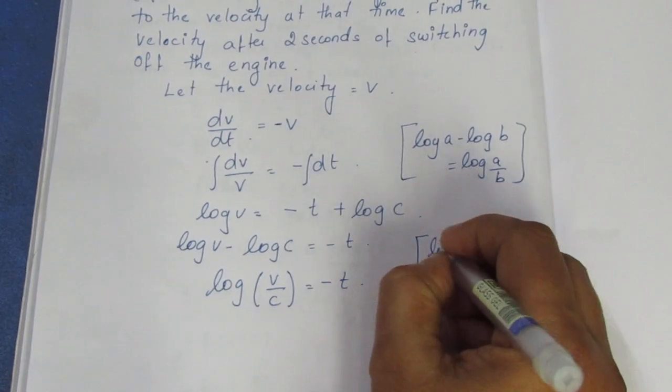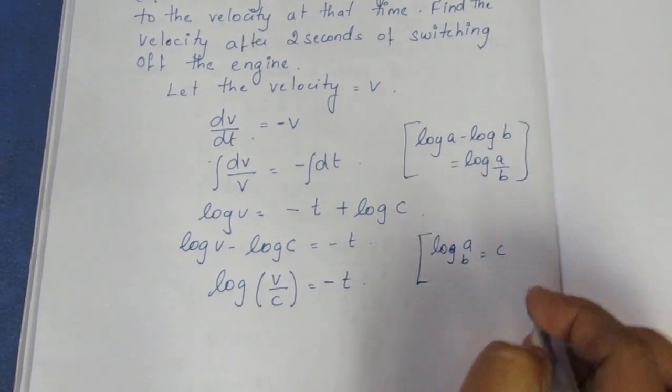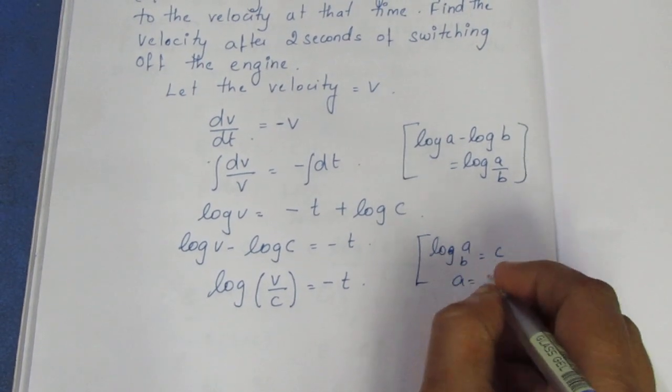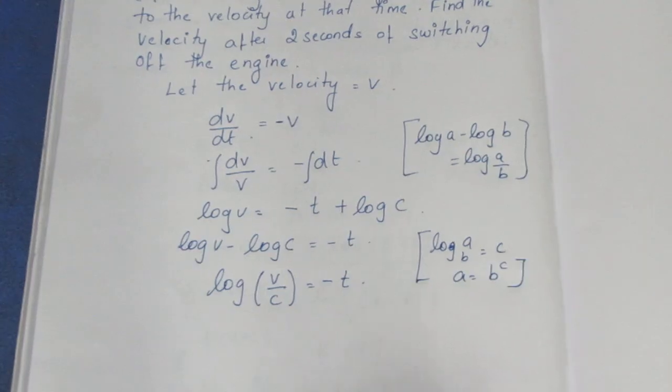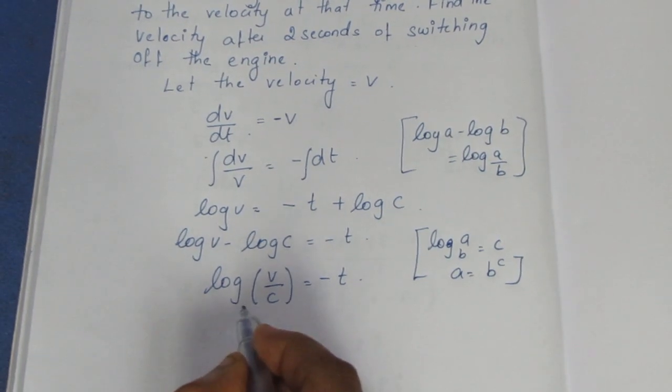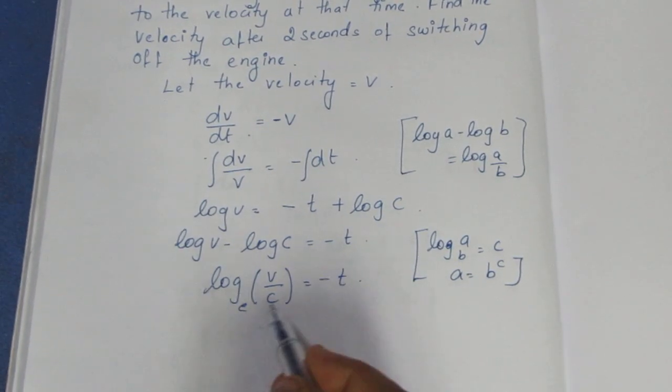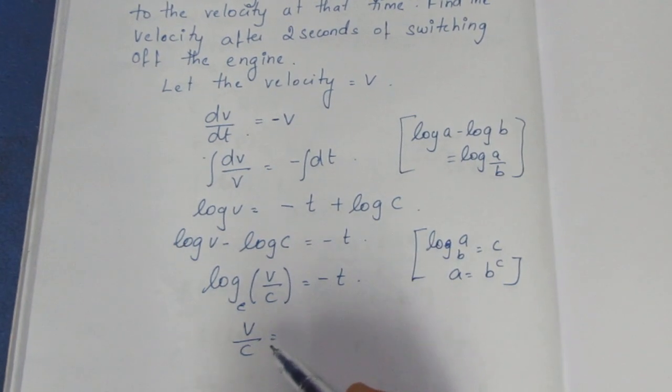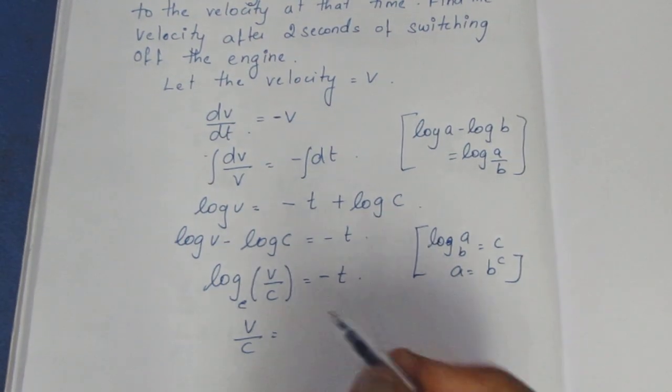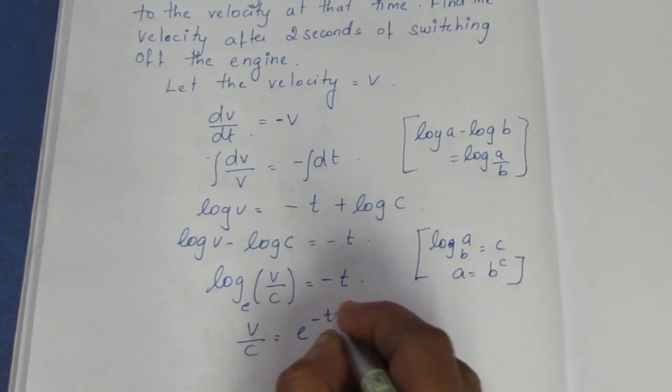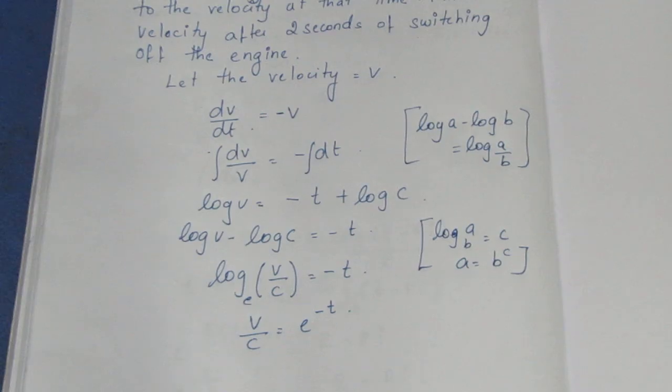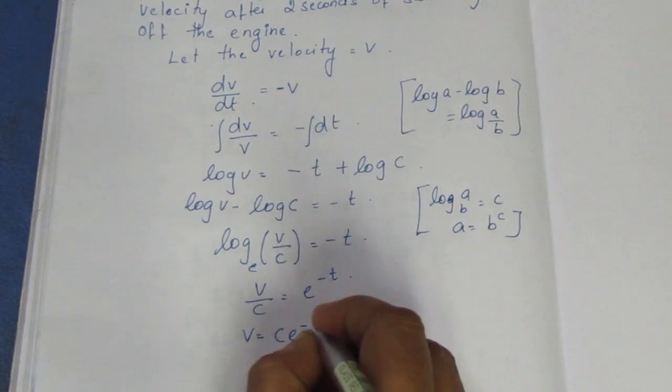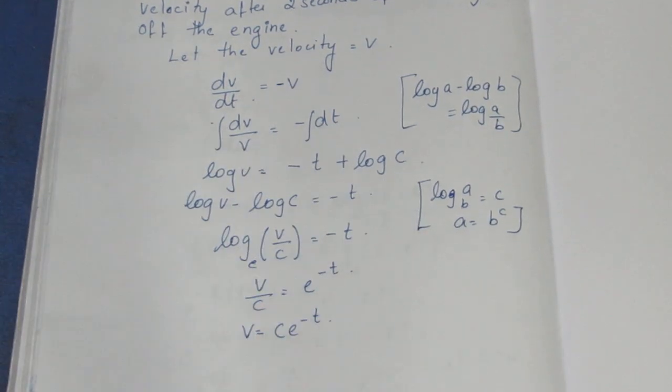Now we change to exponential form using the property: if log base b of a equals c, then a equals b to the power c. Going to base e, we get v by c equals e to the power minus t. Multiplying both sides by c, the velocity v equals c times e to the power minus t.